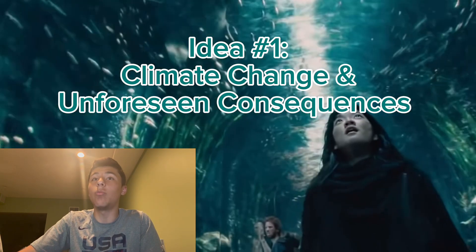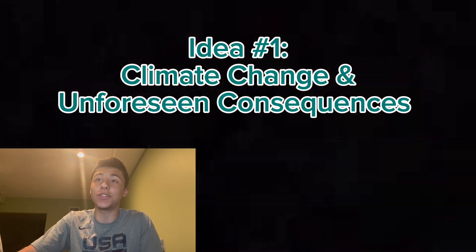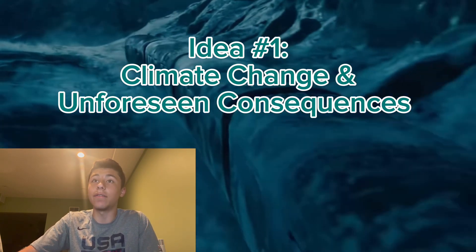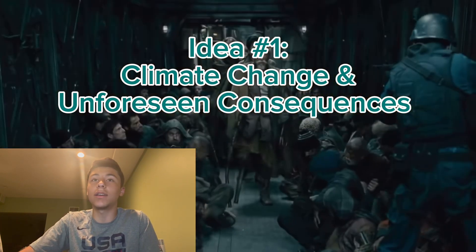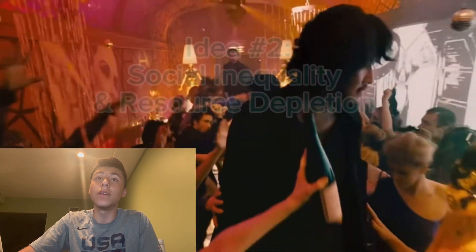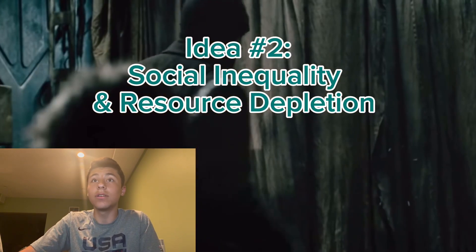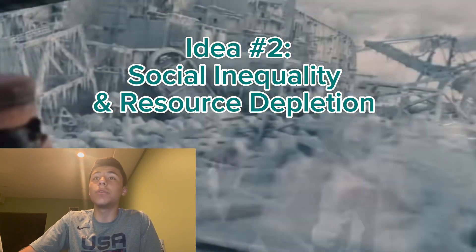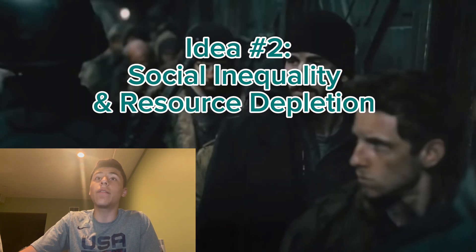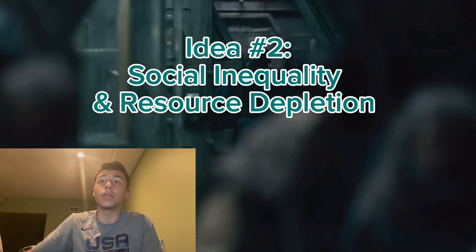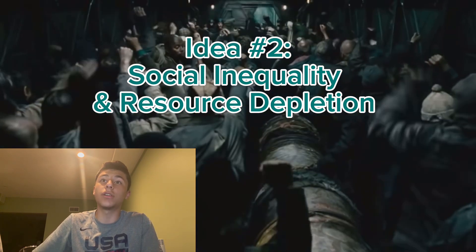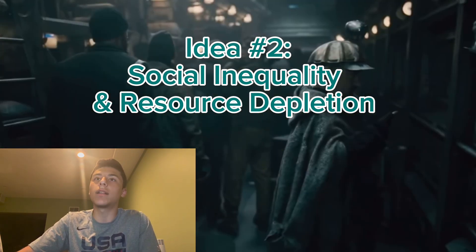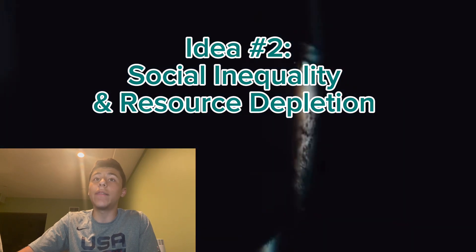First: climate change and unforeseen consequences. The film depicts a future Earth ravaged by an attempt to combat global warming via stratospheric aerosol injection, which catastrophically backfired and created a new ice age, causing an ecocide that killed virtually everything alive. This highlights the potential for unintended consequences when dealing with complex environmental problems. Second: social inequality and resource depletion. The film portrays a rigidly stratified society on the Snowpiercer train, reflecting the unequal distribution of resources — the wealthy elite occupy the luxurious front while the poor are relegated to harsh conditions at the tail end, connecting to discussions on environmental justice.